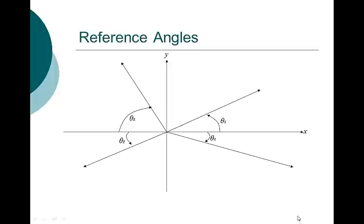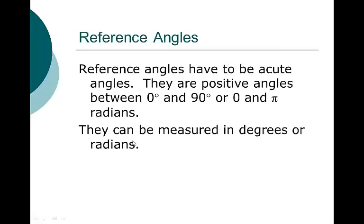If this is the terminal side of the angle, then that's our reference angle. Reference angles have to be acute angles — positive angles between 0 and 90 degrees, or 0 and pi over 2 radians. They can be measured in degrees or in radians.